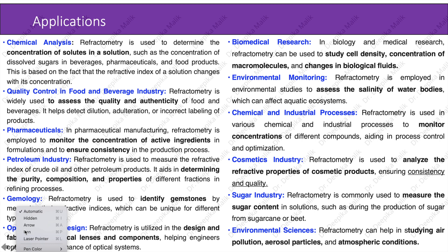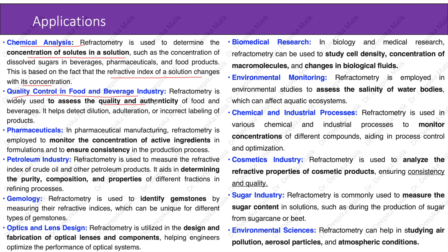Applications of refractometry: Chemical analysis — refractometry is used to determine the concentration of solutes in a solution, such as dissolved sugars in beverages, pharmaceuticals, and food products, based on the change in refractive index with concentration. Quality control in food and beverage industries — it assesses quality and authenticity, detecting dilutions, adulteration, or incorrect labeling. In pharmaceutical manufacturing, it monitors the concentration of active ingredients and ensures consistency. In the petroleum industry, it measures the refractive index of crude oil and other petroleum products, aiding in determining purity, composition, and properties of different fractions in refining. In gemology, it identifies gemstones by measuring their unique refractive indices.